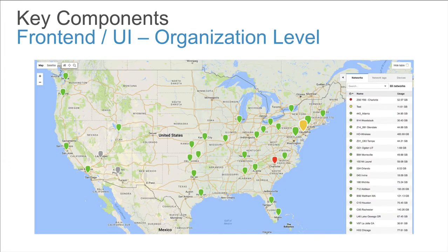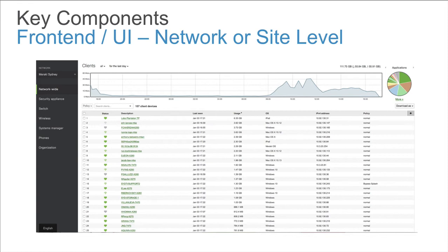The front-end interface is where all Cisco Meraki configuration and monitoring takes place, comprised of many different pages with different functions. Generally speaking, there are four levels at which to view or configure. The first is the organization level — effectively the account level — used when viewing monitoring data or making changes across the customer's entire deployment. The second level is the network level. Networks are configuration containers within an organization and are usually aligned to a physical site or location. For instance, if a customer has multiple branches, each branch would be considered a separate dashboard network. Networks can contain multiple device types, so at a site with more than one Cisco Meraki product line deployed, all of those devices could be in that one site's network in the dashboard.